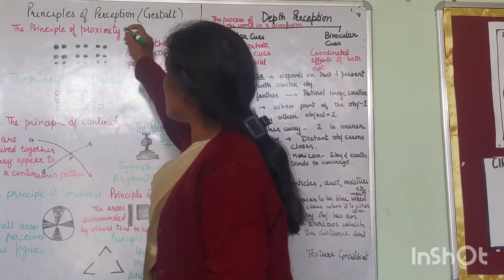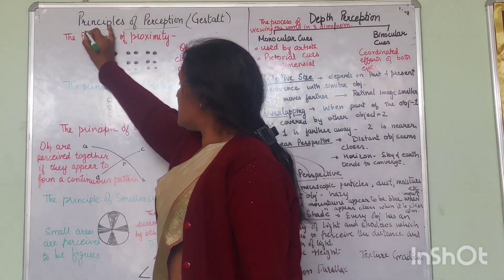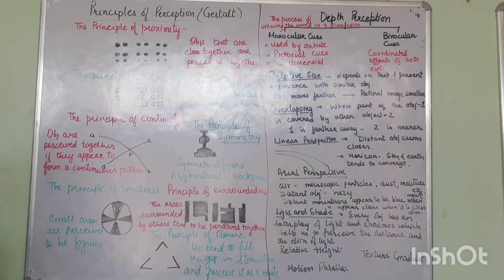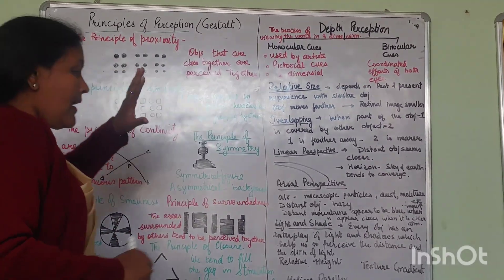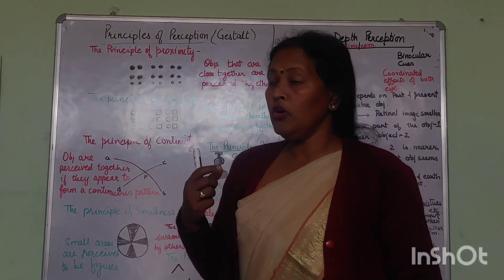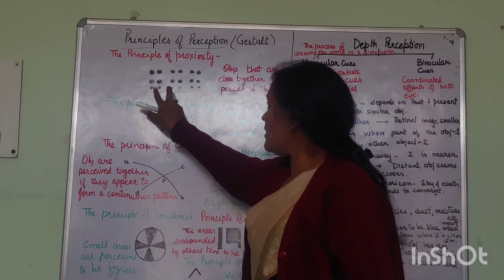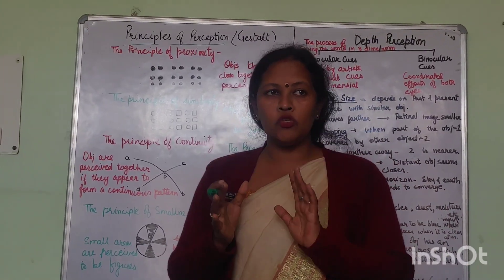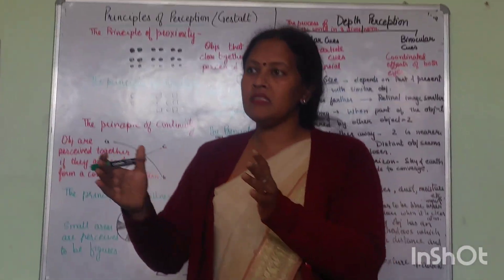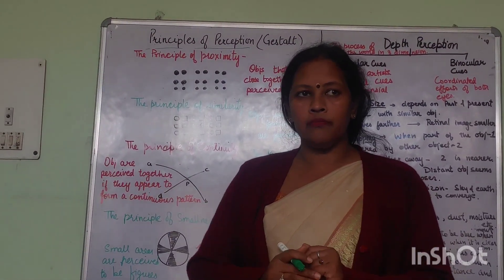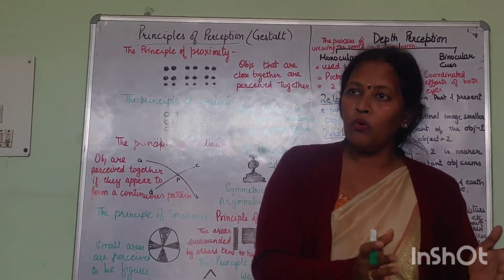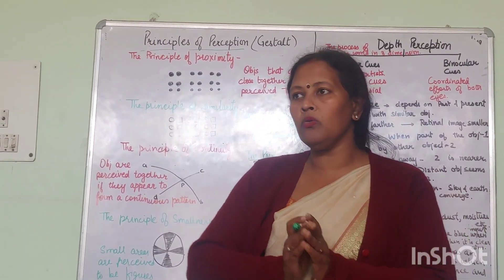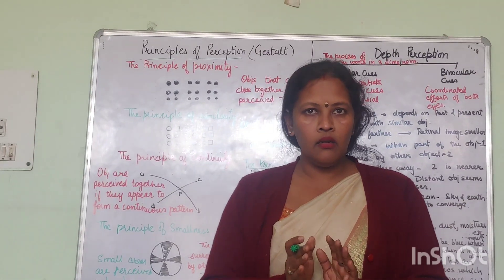Now, there are the principles of perception as given by Gestalt. The first principle is the principle of proximity. Proximity says that it is our habit to perceive things together if they are coming together. If you have a school class, visualize your class where you have six chair-tables. When you have two-two rows in the chair-table, you say three rows, not six.